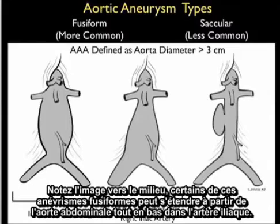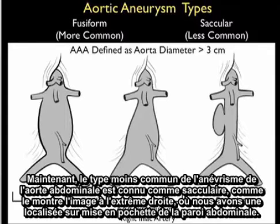Notice the picture towards the middle. Some of these fusiform aneurysms can extend from the abdominal aorta all the way down into the iliac artery. Now the less common type of abdominal aortic aneurysm, known as saccular, is shown in the picture to the far right, where you have a localized outpouching of the abdominal wall.